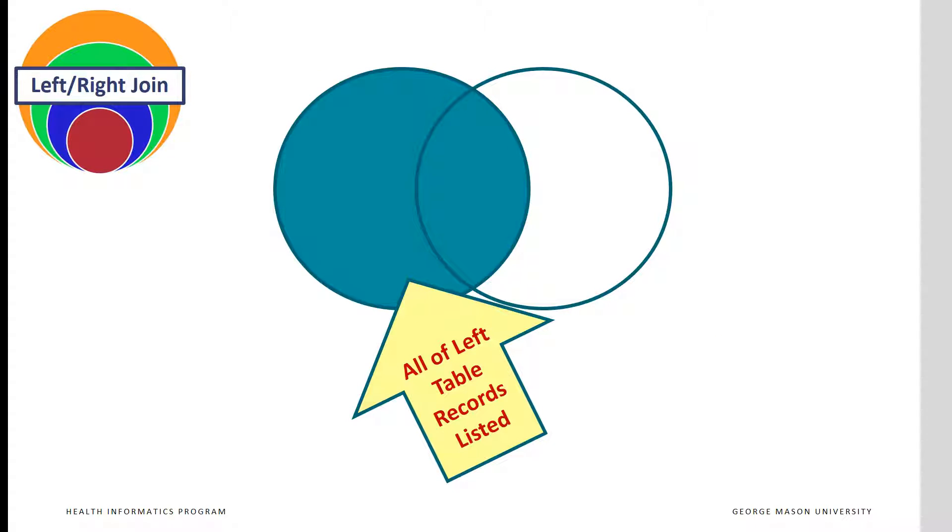The left and right joins allow the field in one table to be always included, and the fields from the other table included only when the IDs match. When the two IDs do not match, the record is still kept, but there will be a null value in place of the missing record.